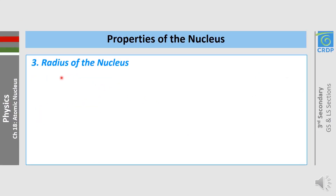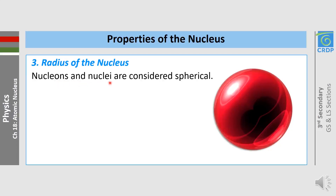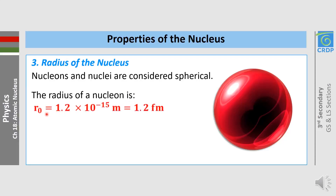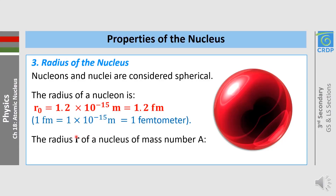Let's move now to the radius of the nucleus. Nucleons and nuclei are considered spherical. The radius of a nucleon is R₀ = 1.2 × 10⁻¹⁵ meters, which is 1.2 femtometers. The radius of a nucleus of mass number A is given by R = R₀ × A^(1/3).